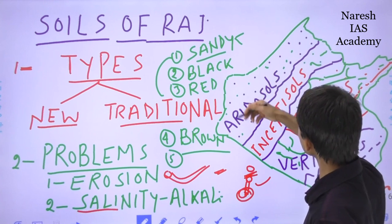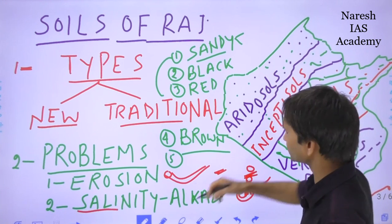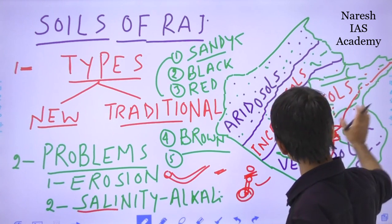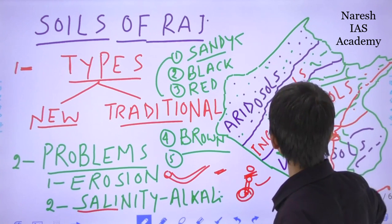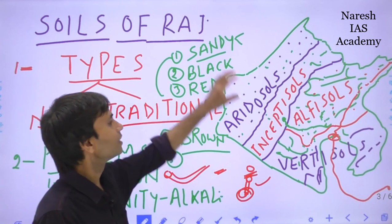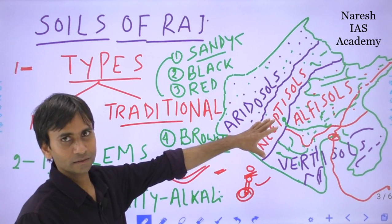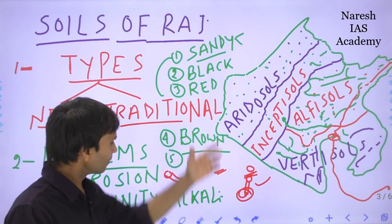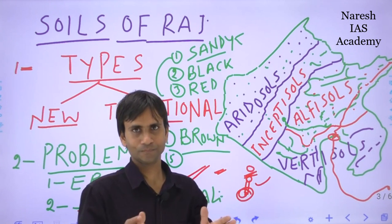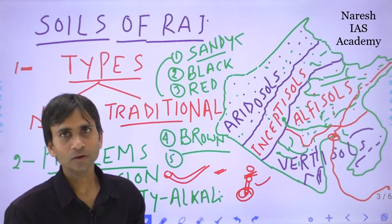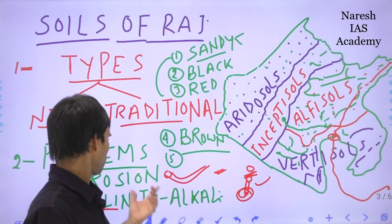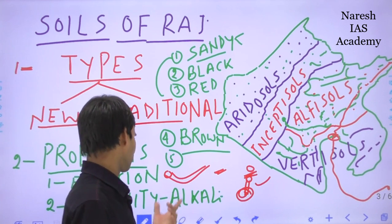Mainly western Rajasthan is facing these two kinds of problems. These problems are also identified in the interior parts of Rajasthan. The government has started the use of gypsum to fight the problem of salinity and alkalinity. These problems are mainly due to major concentration of sodium chloride, which comes above the soil surface due to capillary action.